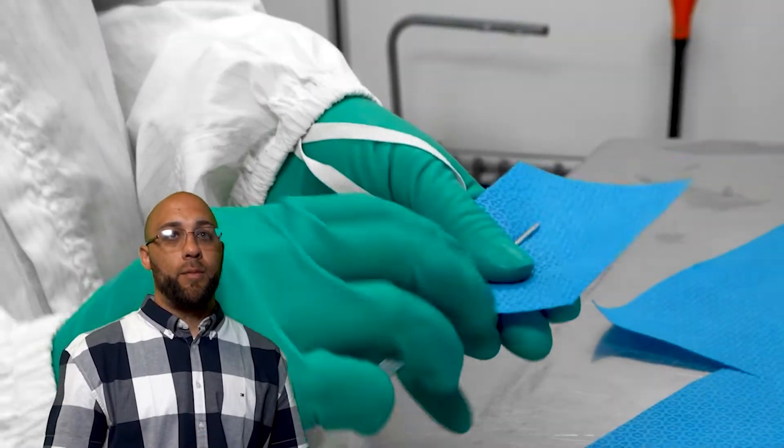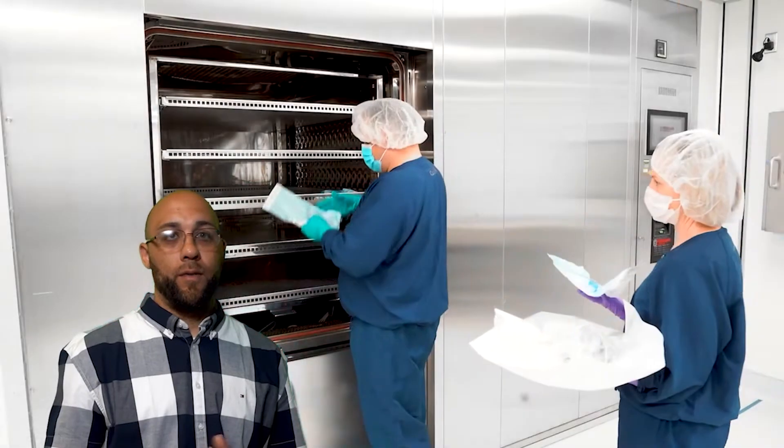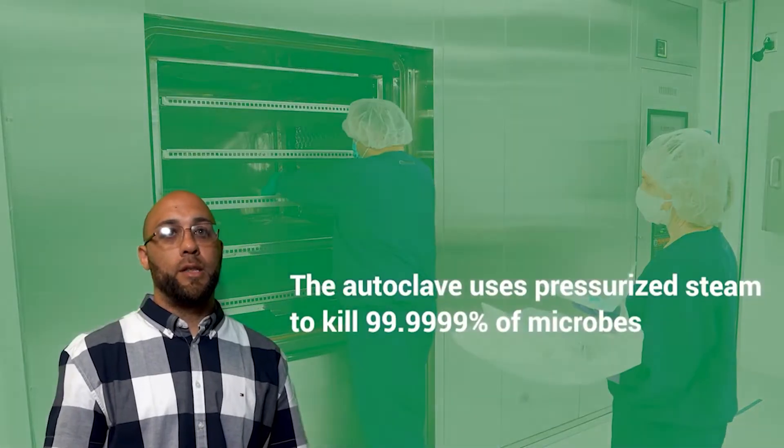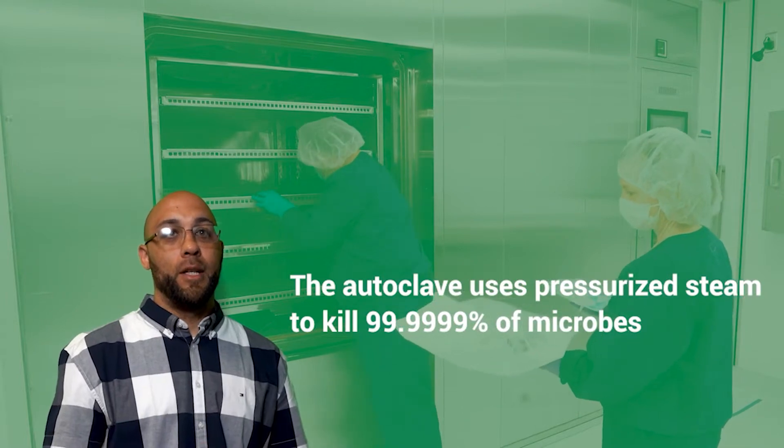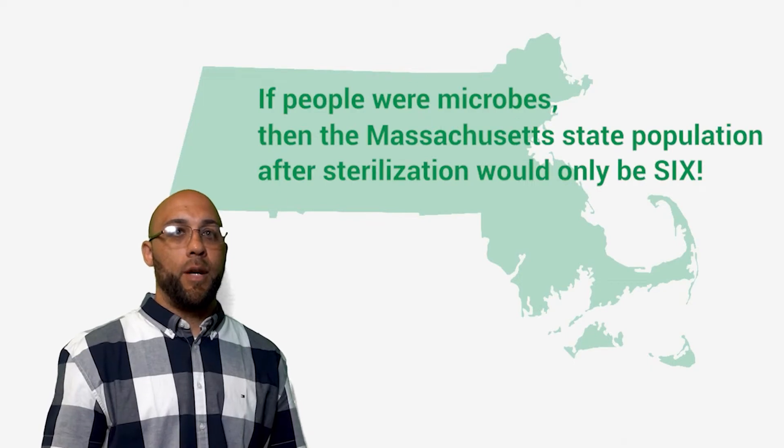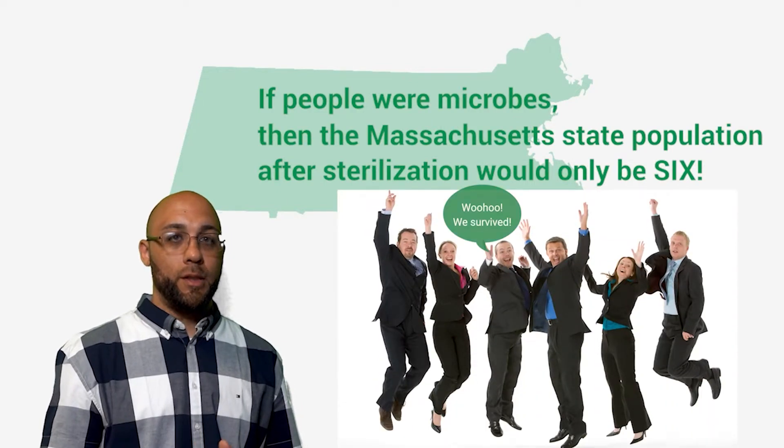In here, we wash, prepare tools and materials, wrap them in autoclave bags, and sterilize them in our autoclave. The autoclave will use pressurized steam to kill 99.9999% of all microbes. This means only one out of a million bacteria will survive. If people were microbes, then the Massachusetts population after sterilization would be six.